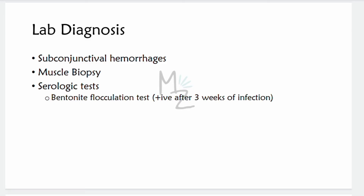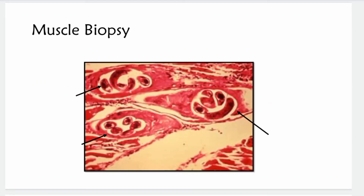Lab diagnosis: subconjunctival hemorrhages are really important for diagnosis. Muscle biopsy is performed, which reveals encapsulated larvae within the striated muscles. In the image you can see striated muscle with three arrows pointing to larvae present in coiled or spiral forms.